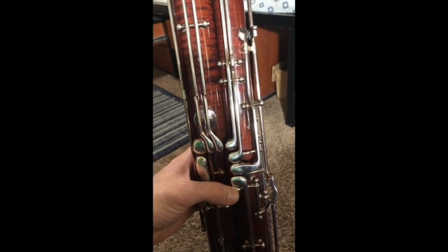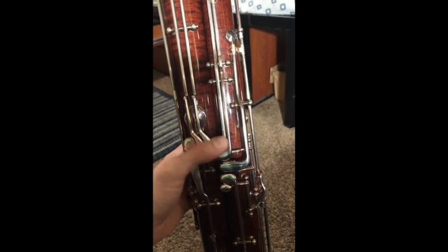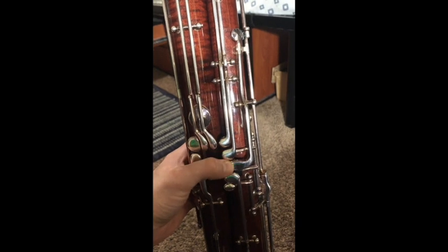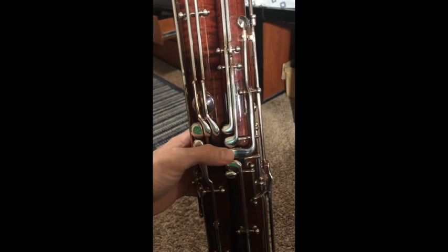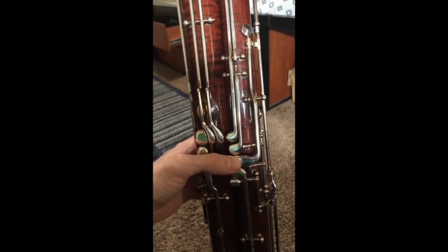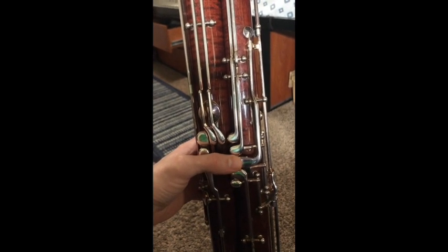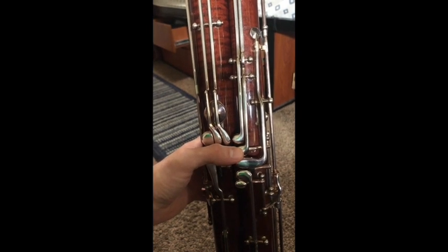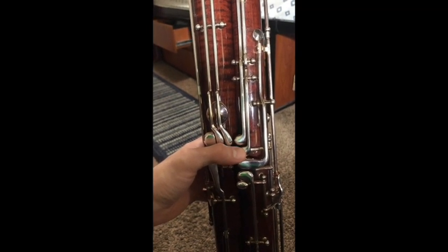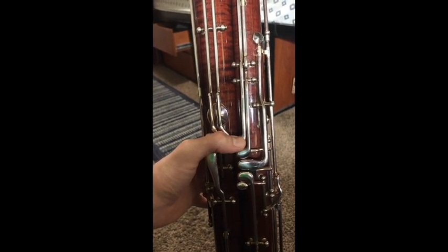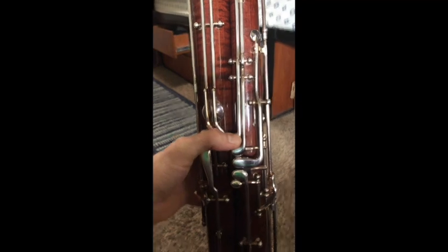Now, when going above, you'll see you have all these extra keys. These are your venting and flicking keys. This key is going to control the venting and flicking for A on top of the staff. This key is going to control B flat, B, and C on top of the staff. This top key is going to help you with the D on the top of the staff.